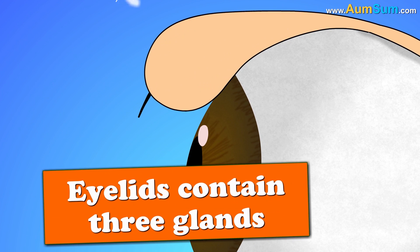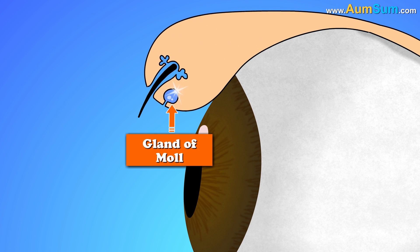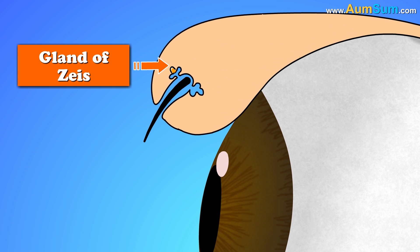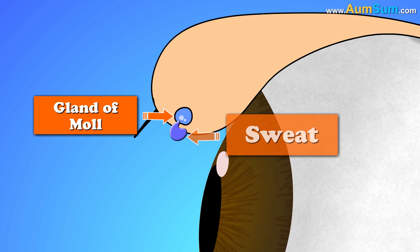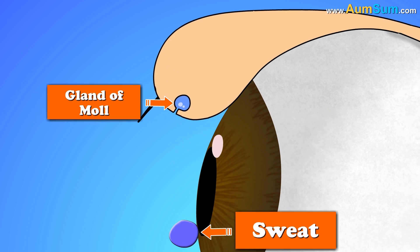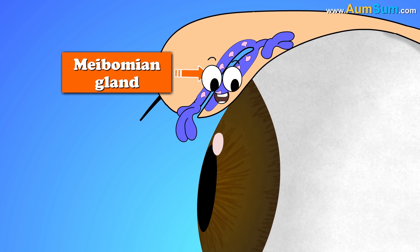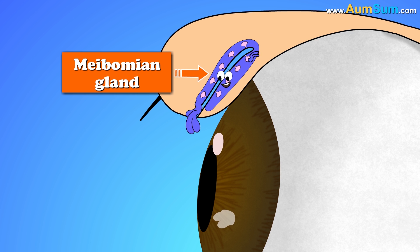Our eyelids contain three glands called Gland of Zeiss, Gland of Mull, and Meibomian Gland. Gland of Zeiss secretes an oily substance to lubricate our eyelashes. Gland of Mull is a sweat gland, while Meibomian Gland prevents the evaporation of our eye's tear film.